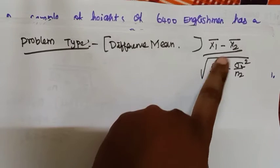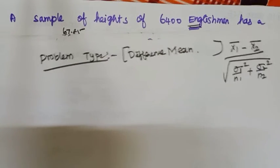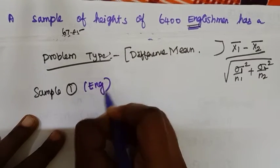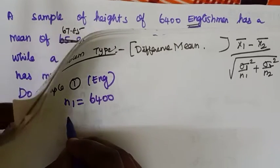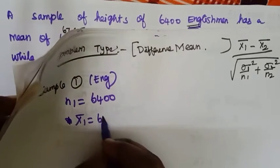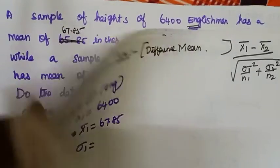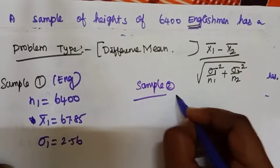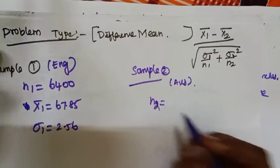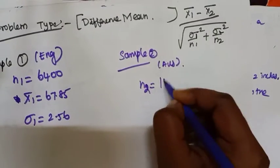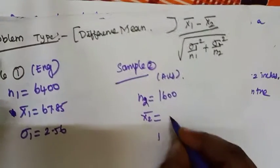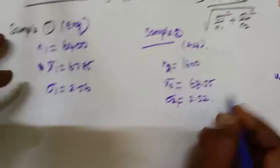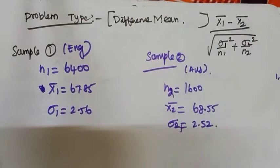Sample 1 details: n1 = 6400, x1-bar = 67.85, sigma1 = 2.56. Sample 2 details: n2 = 1600, x2-bar = 68.55, sigma2 = 2.52. The formula is now clear.